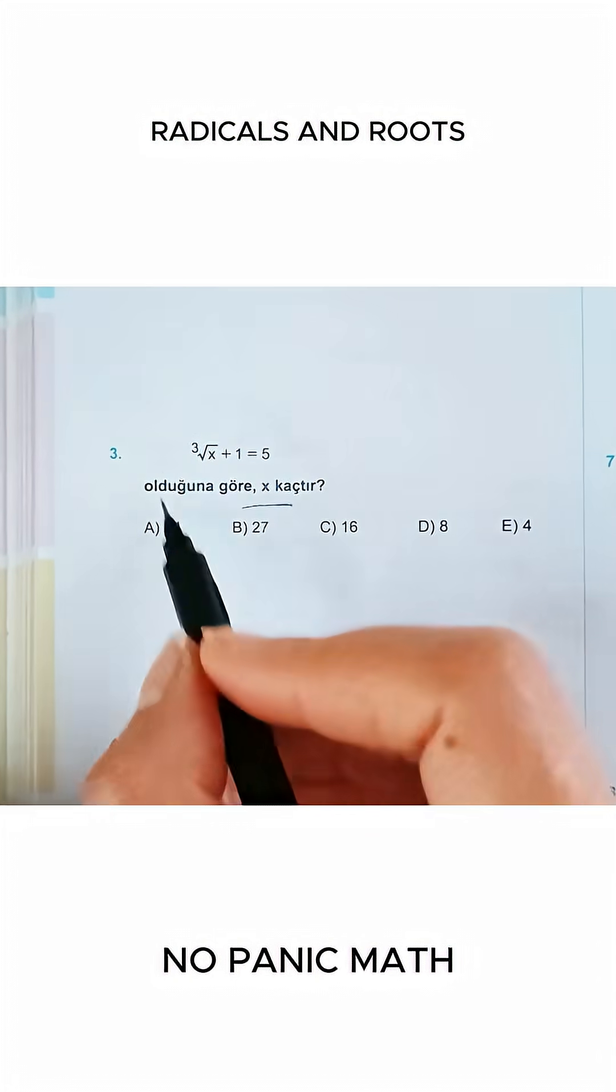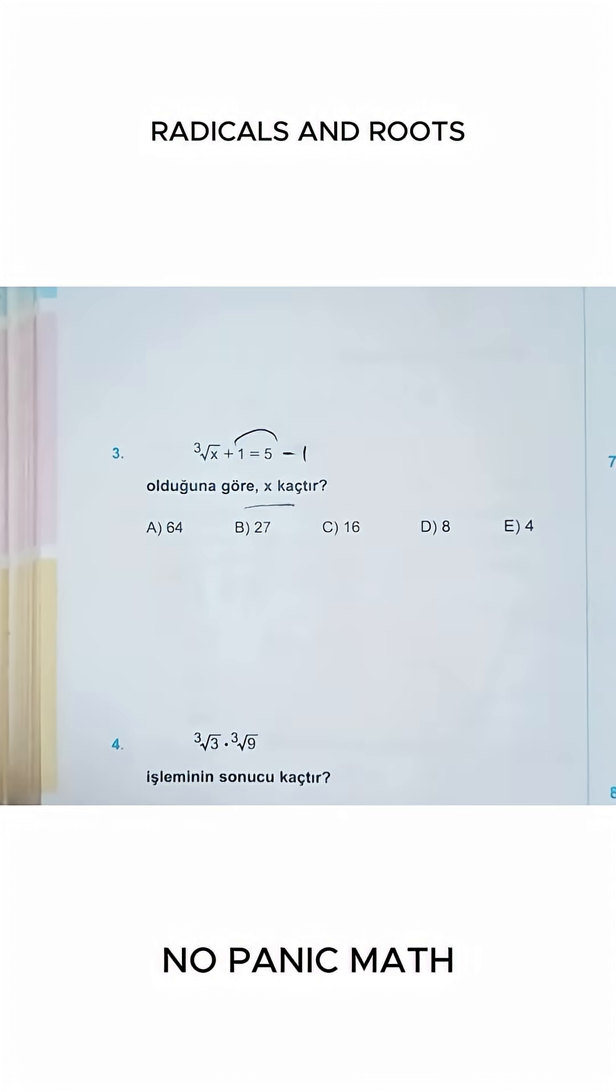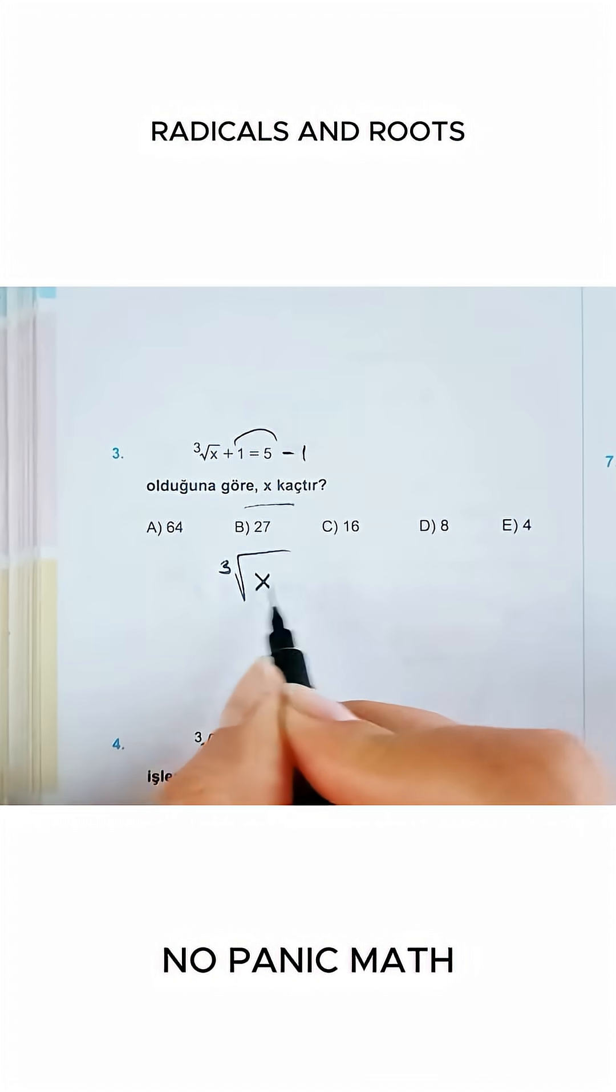They're seeking the value of x. Simplify the equation. Let's move one side to the other as a negative. Now, what do we have left? The cube root of x equals 4.